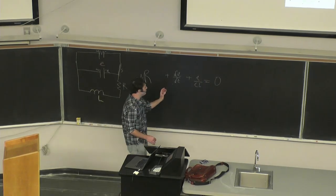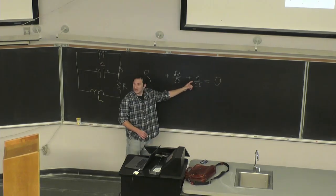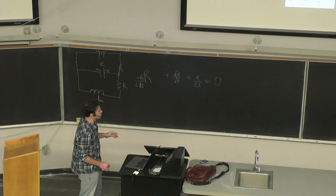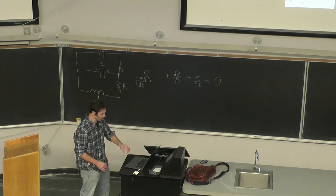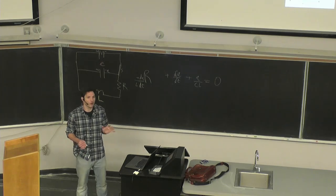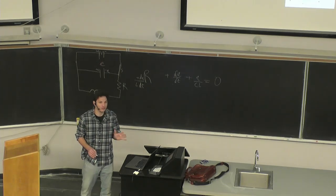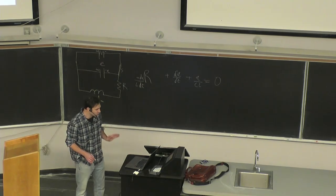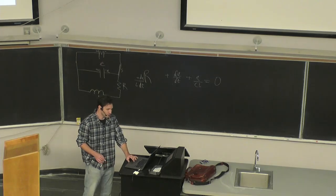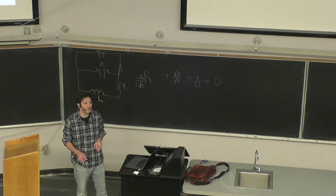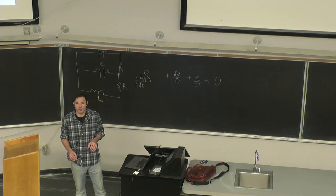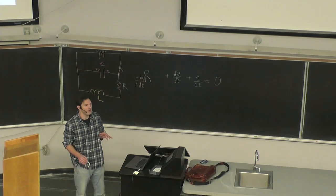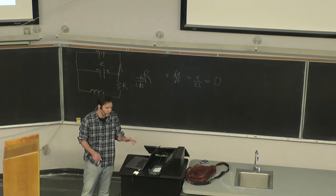The Q over C term originally was Q over C, and then we divided by L to get the second-order differential by itself. What we have then is: we solve this differential equation and get an expression for Q. This solution corresponds to underdamped behavior. To understand that, you'd really have to get into the study of harmonic functions, which is something mathematicians and physicists developed in the 1800s.